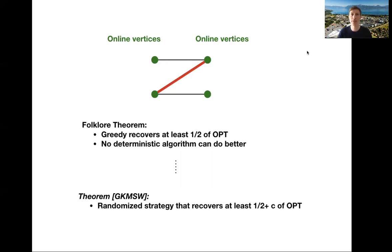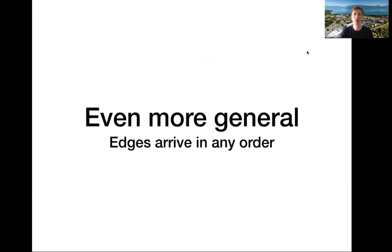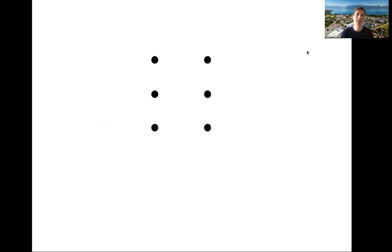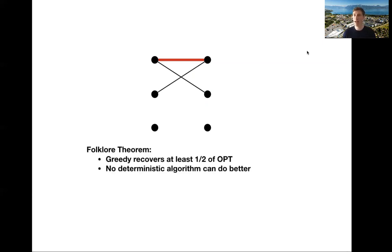So this was for two side vertex arrival, but you could imagine even more general arrival model where edges arrive online. And arguably, I would say that this is the most natural model. So an edge arrives online and you need to make a decision whether to include it in your matching or not. So if we run the greedy algorithm, we will include this edge, but then we cannot include this edge because one of the neighbors is not free and so on. So again, this greedy algorithm will recover one half of opt in this more general model. And that's the best you can do if you're interested in deterministic strategies.